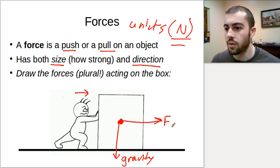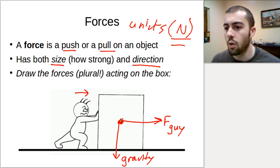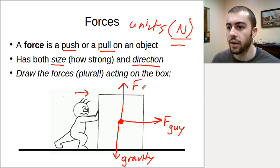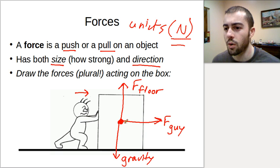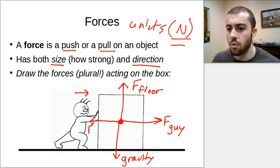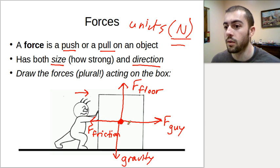So we have the force from the guy, and we have gravity pushing downwards. What other forces do we have? Well, if gravity is pushing downwards and the box isn't just moving downwards, we know something has to be pushing it up, keeping it from moving downwards through the floor. So the floor is going to push upwards on the box as well. And as the guy pushes across the floor, it's not that easy - something is kind of holding it back. This is a force called friction. Friction is a force that opposes motion, so as the guy tries to push across the floor, friction between the box and the floor is going to make it a little more difficult.